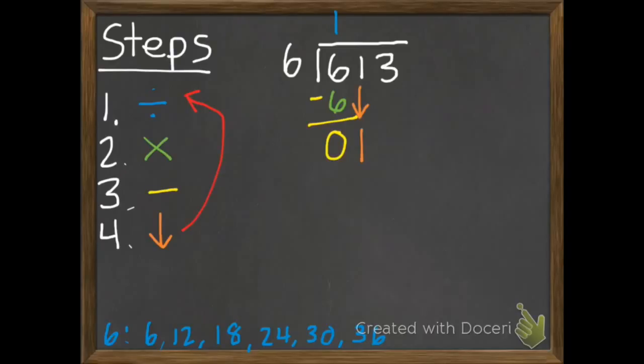Remember just to bring down one number at a time. So we only have 1. If we only have 1, we can't give it 6 groups. So they all get 0. Keep doing all your steps. So we're on to step 2. Multiply. 0 times 6 is 0. 1 subtract 0 is 1. Bring down.